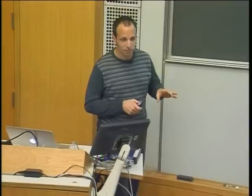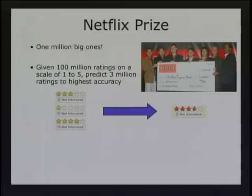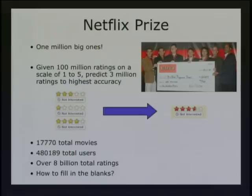If I focus on the Netflix one — which I like mostly because they offered money, which is what got us all interested in this problem — they had a very specific challenge: here are one hundred million of our ratings, and all we want you to do is improve our system by ten percent on another set of three million. They gave us ratings for seventeen thousand or so movies and about five hundred thousand users, and the goal is to predict those extra three million to high accuracy in root mean square error.